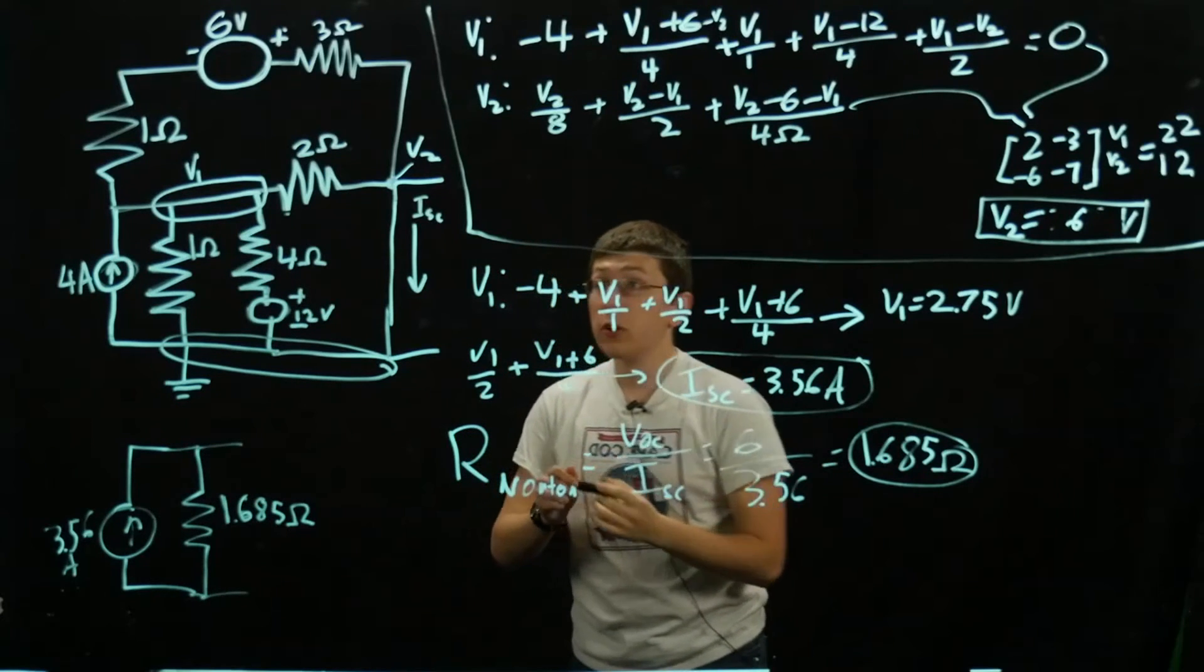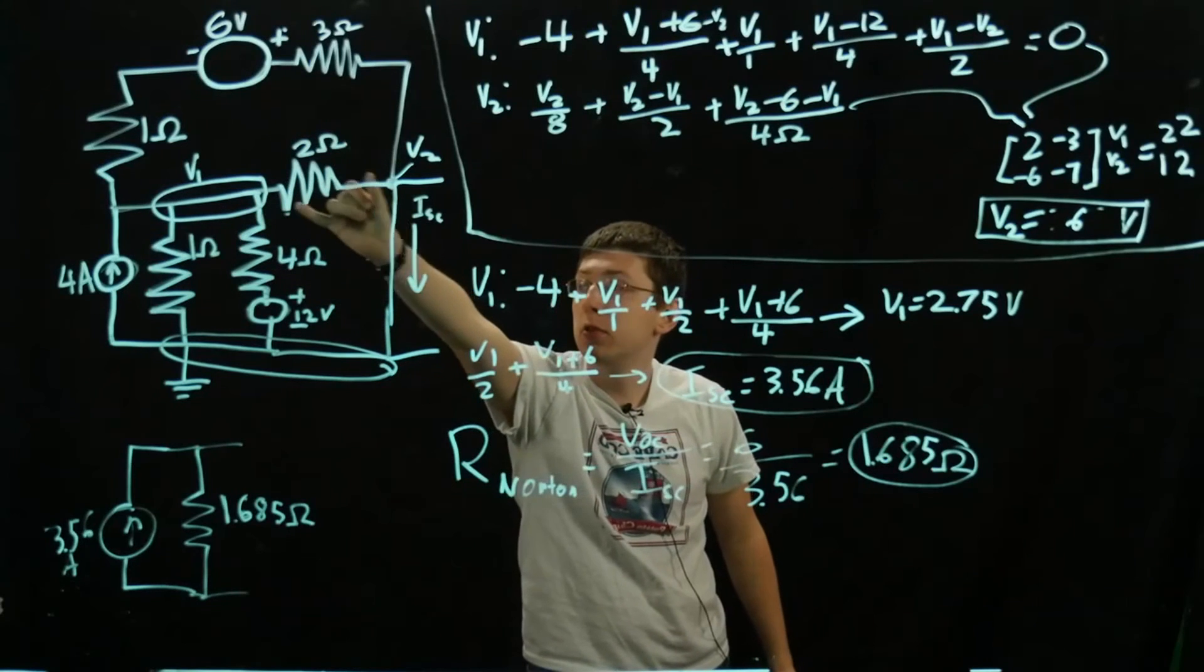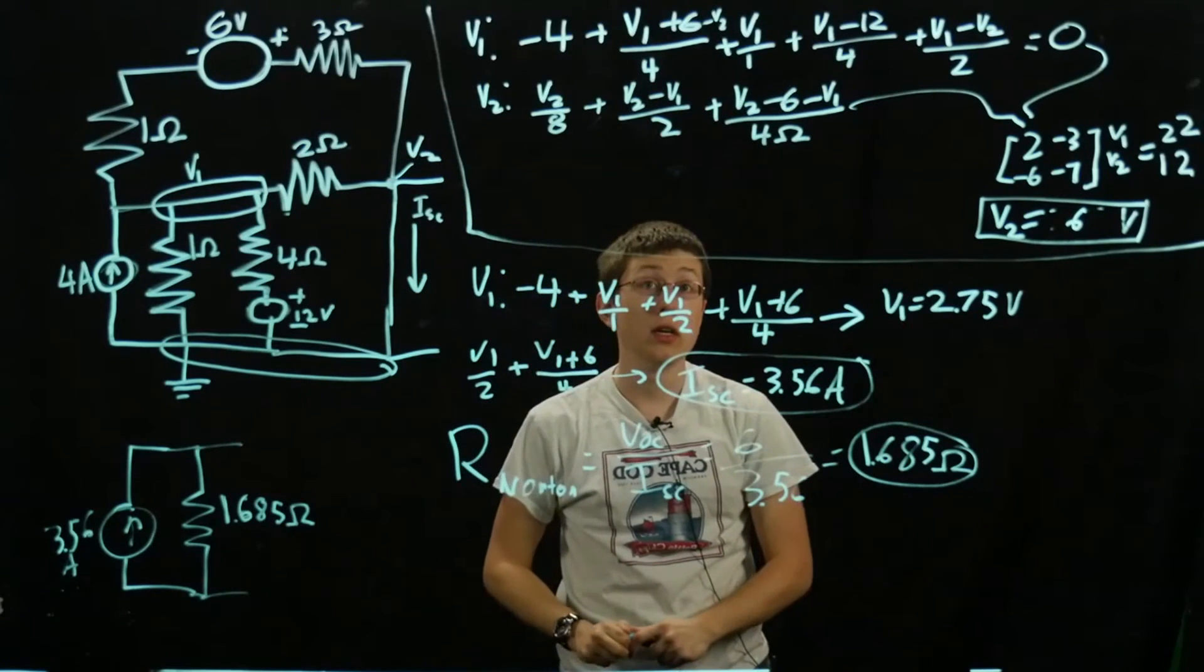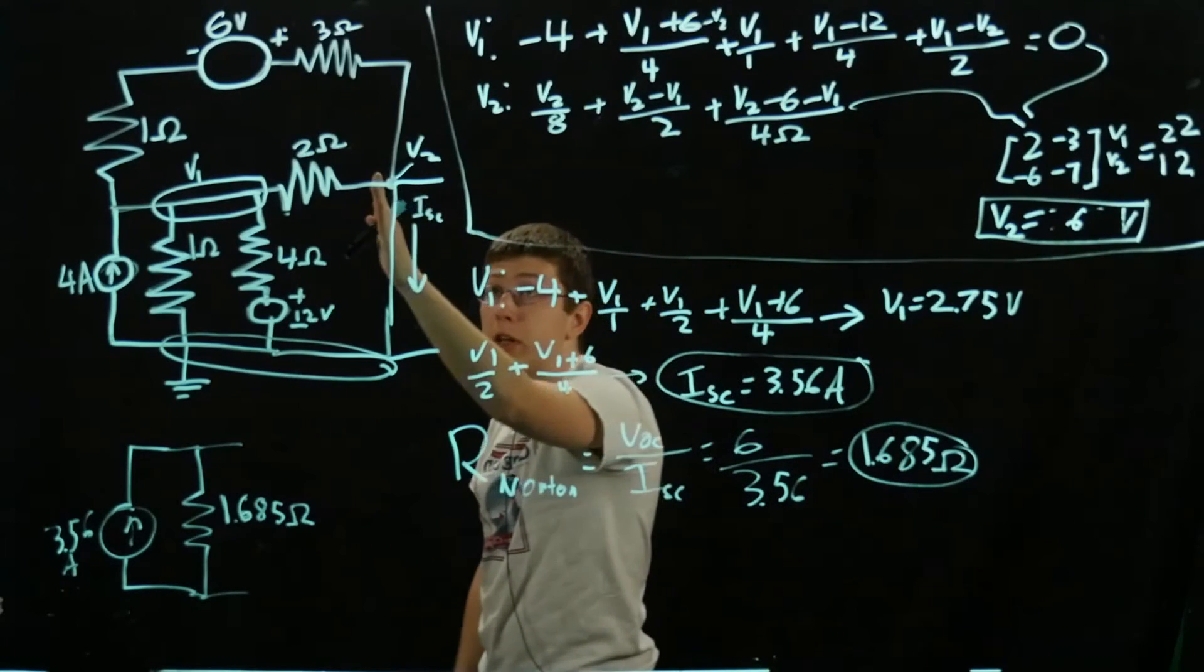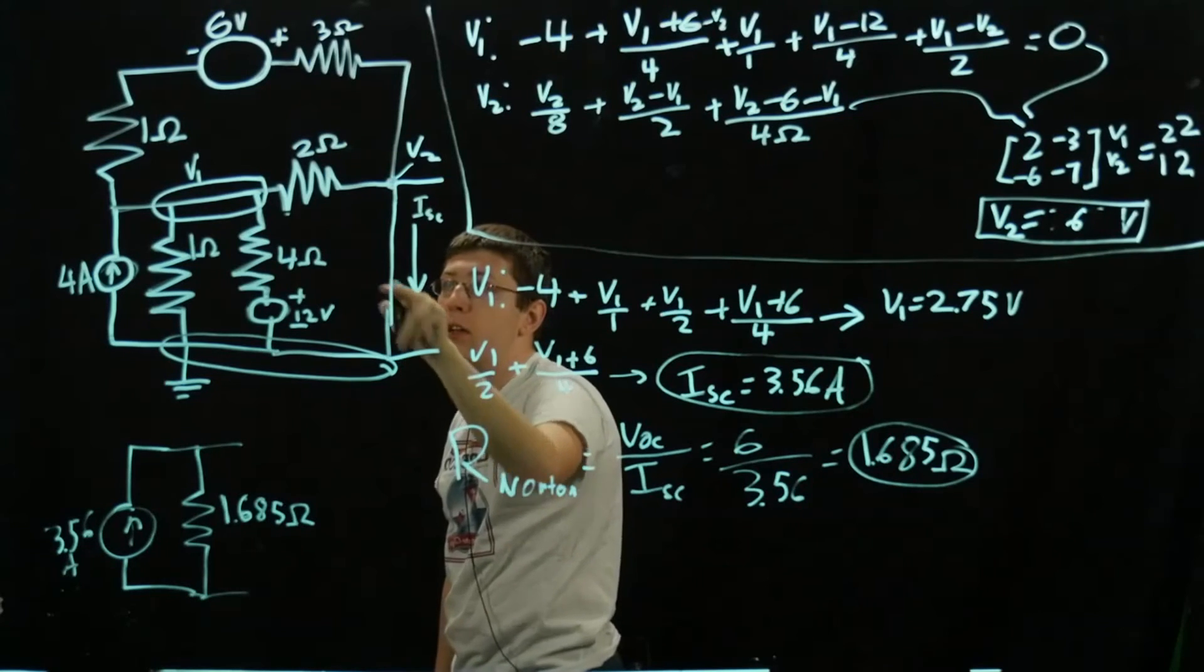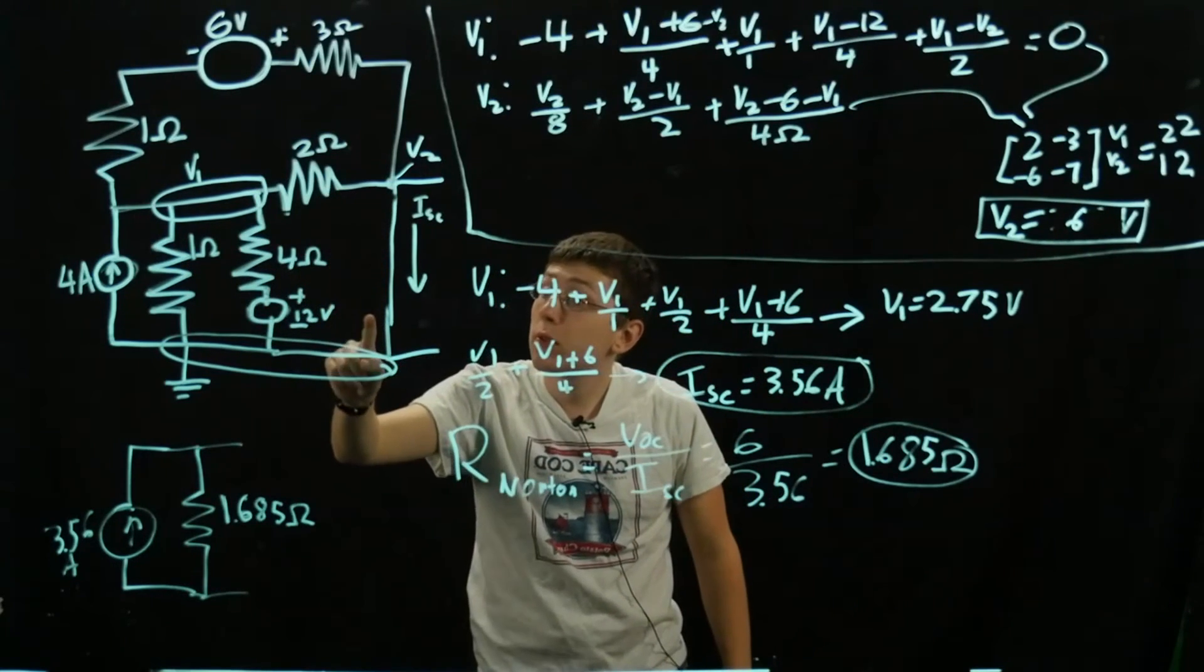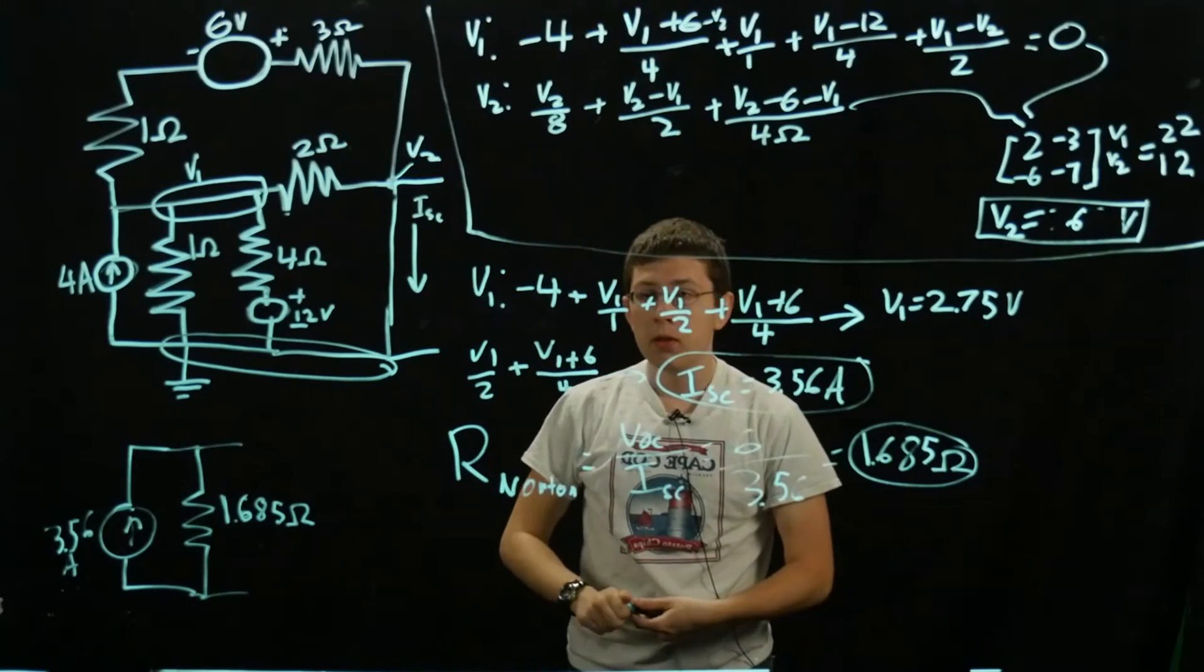We first performed a node voltage analysis with these two nodes, only really caring about V2 because that's where we're taking the equivalent across. Then we shorted our 8 ohm resistor to find our ISC. To do that, we had to find this voltage V1 using node voltage, and then found the current flowing through here as it related to V1.